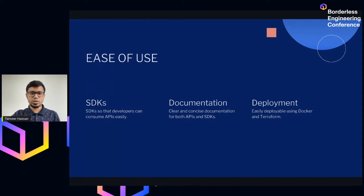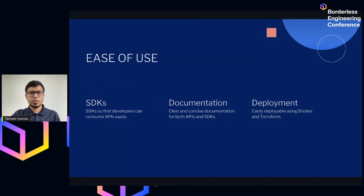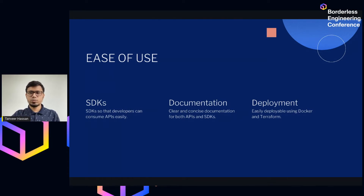We decided to use TypeScript for the web application SDK and created interfaces so that developers can just type 'message dot' and get all the attributes right there without having to go through documentation. Apart from this, we still wrote clear and concise documentation. For ease of use on the DevOps side, we used Docker and wrote Dockerfiles. We also plan to write Kubernetes files, though we heavily rely on Docker at the moment.